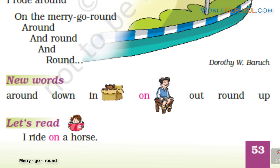Round and round. Round means a circle. This is going down and this is out. These are some new words: around, down, up, in, out, on.